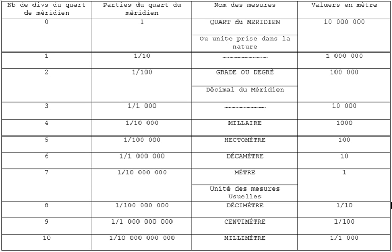By the 8 May 1790 decree, the Constituent Assembly ordered the French Academy of Sciences to develop a new measurement system. In August 1793, the French National Convention decreed the metre as the sole length measurement system in the French Republic. The first name of the kilometre was 'Millaire'. Although the metre was formally defined in 1799, the miriametre was preferred to the kilometre for everyday use.